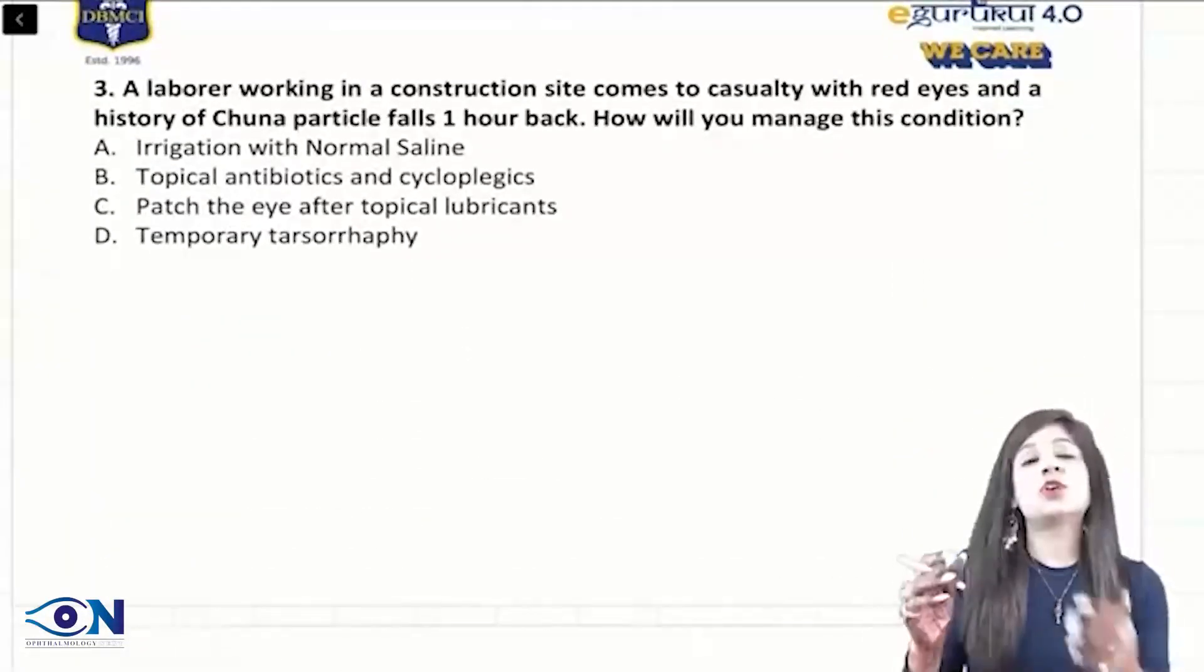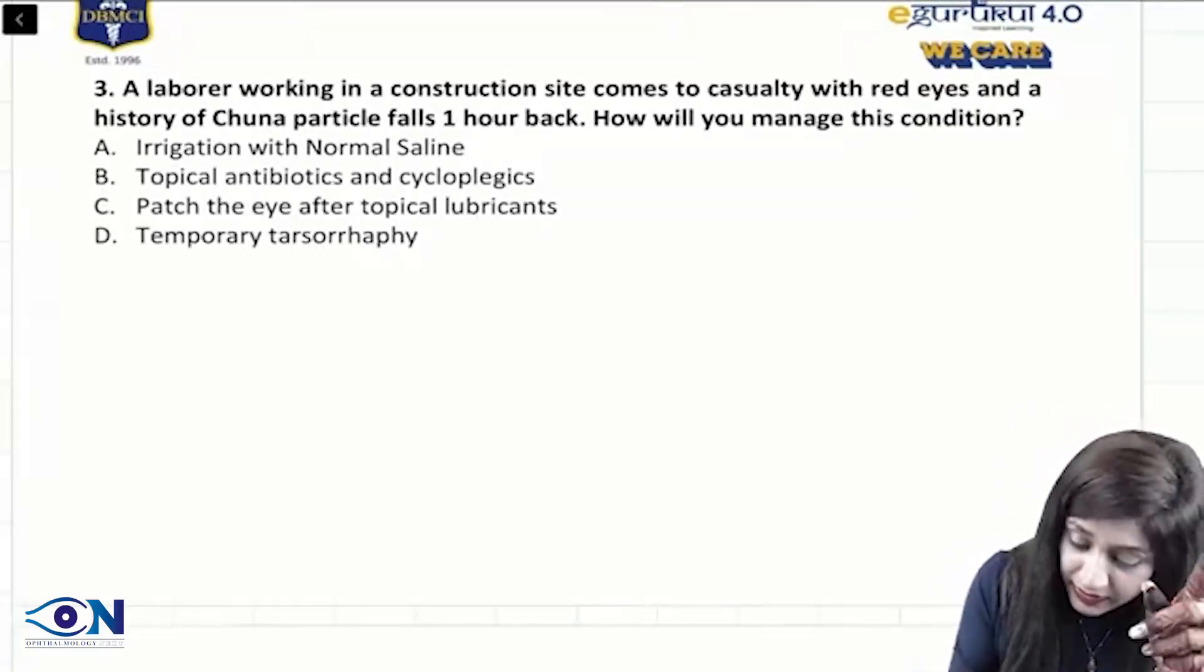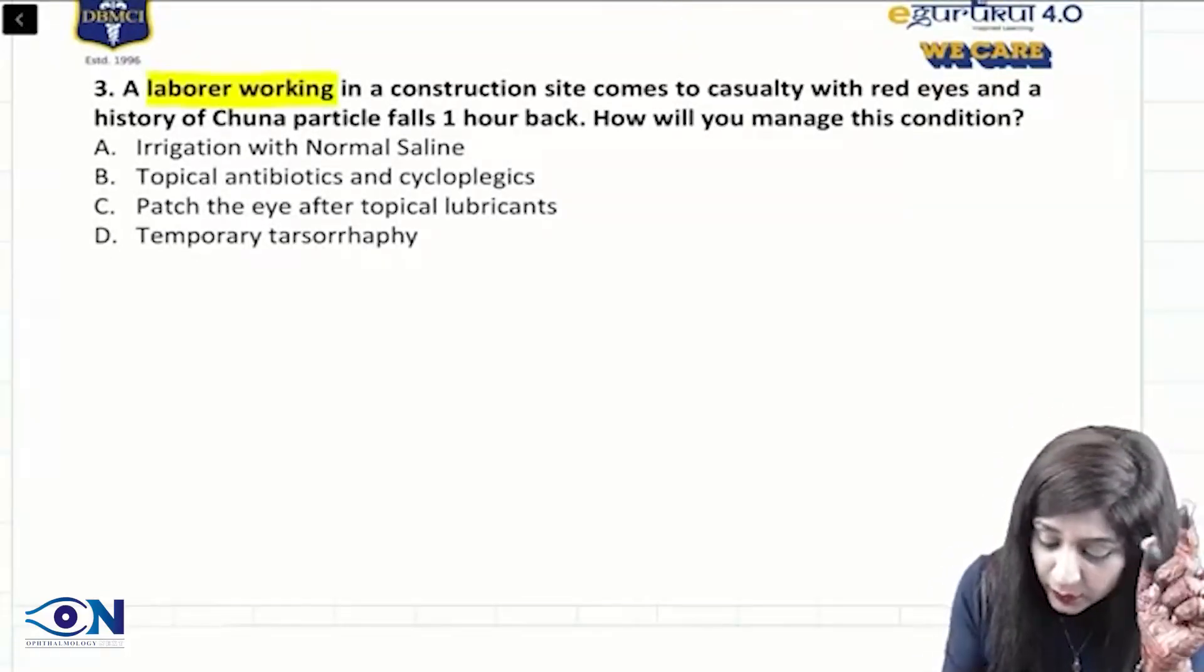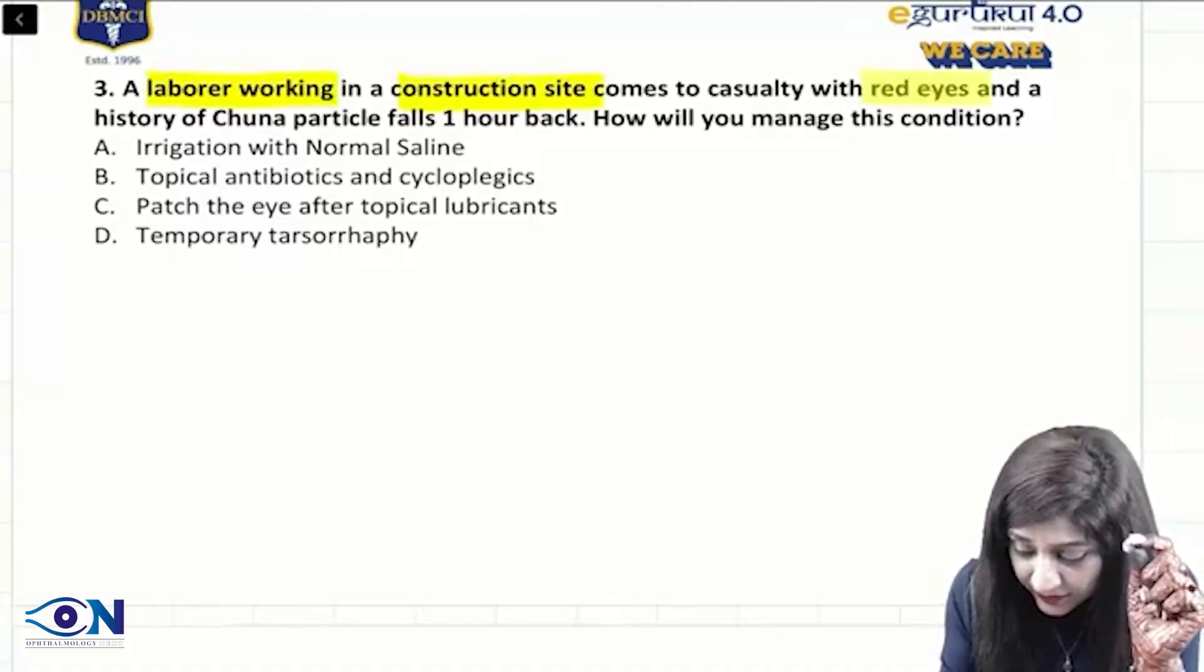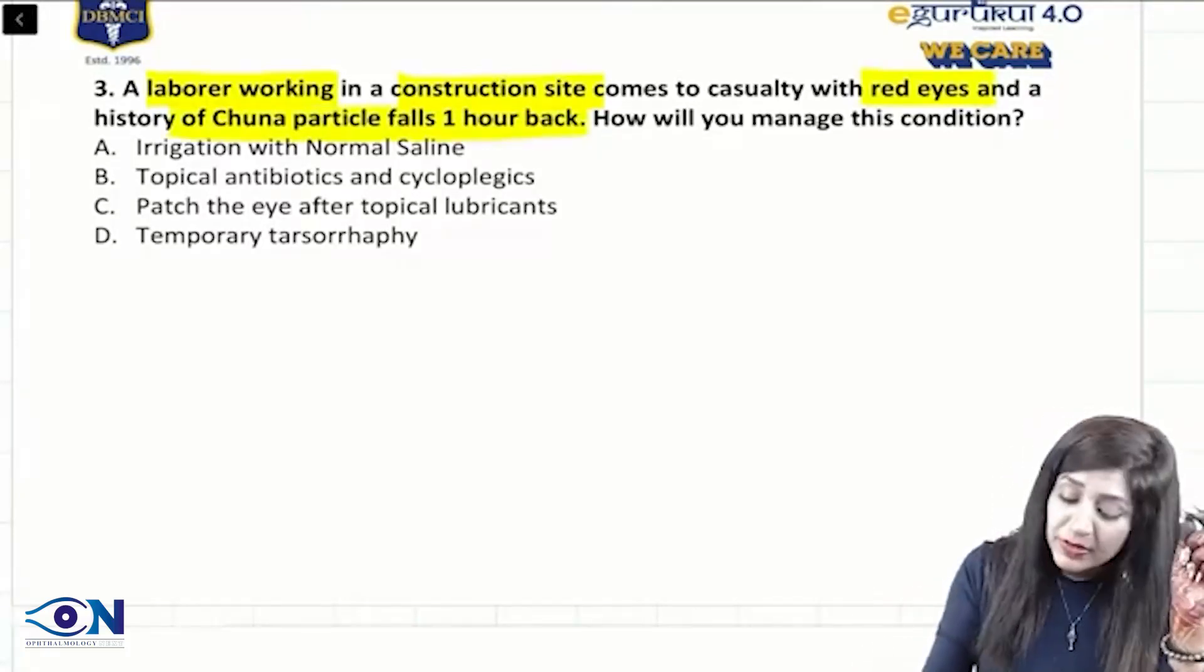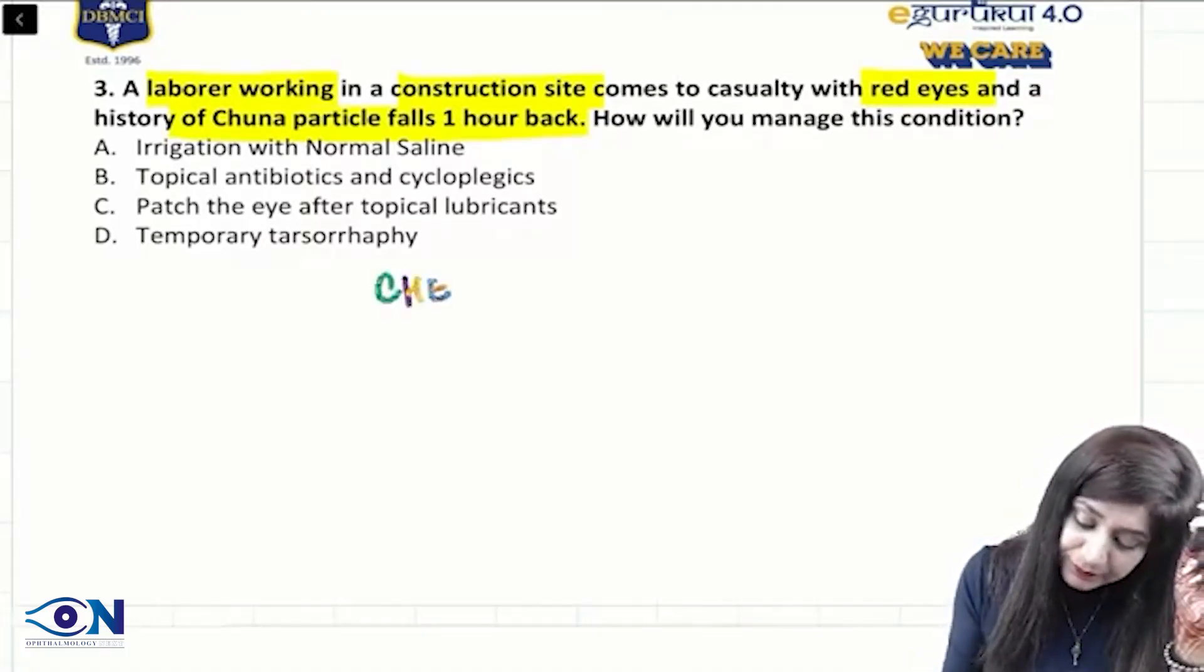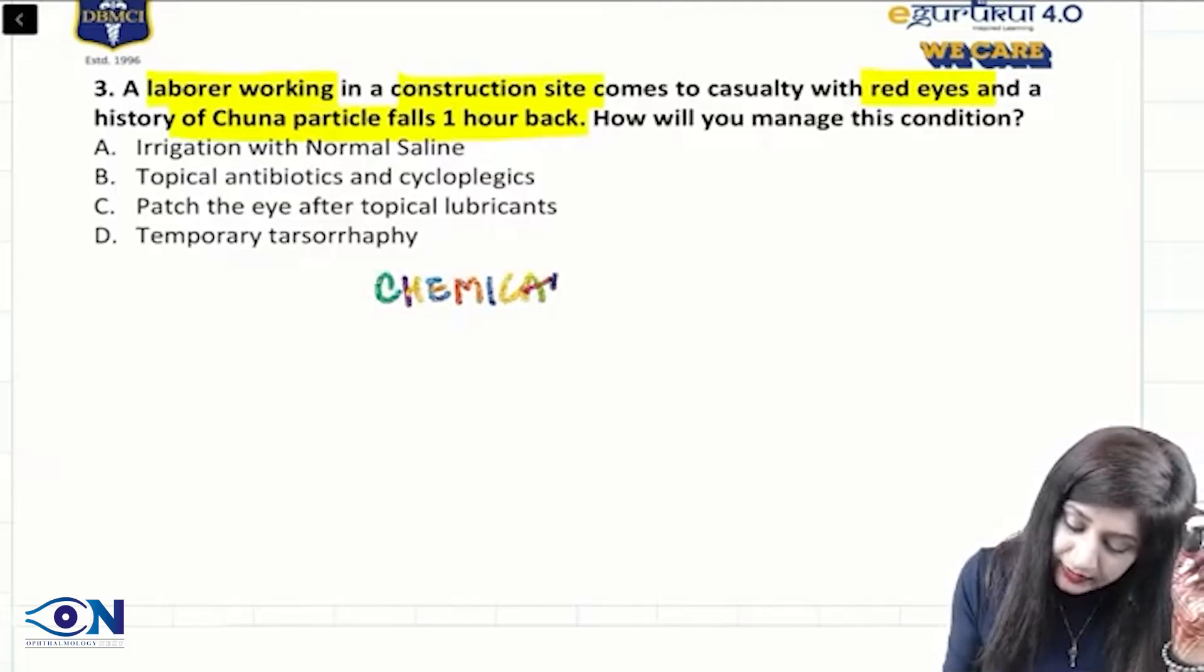Let's move to the next question. This question is related to chemical injuries where a laborer working at a construction site comes with red eyes and history of chuna particles falling one hour back. Chuna particle injury is actually a chemical injury or chemical burns.